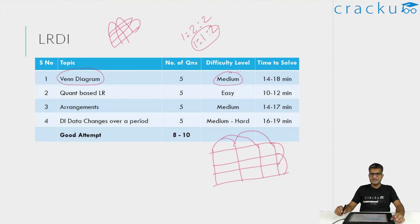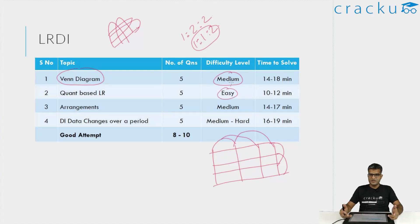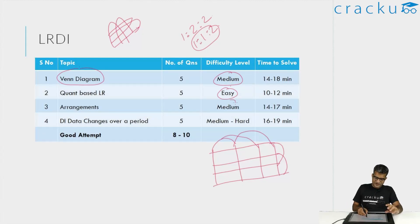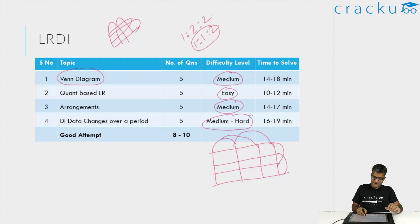The second set is a quant-based LR — a new type of set. Very few people attempted it, but it is actually a fairly easy one — not difficult at all. I think there are only three cases, and if you find them you can get all five questions correct. But because it looks different, very few people attempted it. Don't worry — you have to at least try some of these questions to gain confidence. This is the easiest of the four sets and something you should definitely attempt. The next one was arrangements, which I think was slightly on the medium side. Then there was DI data changes, which I think was slightly on the medium to hard side with two cases to figure out.